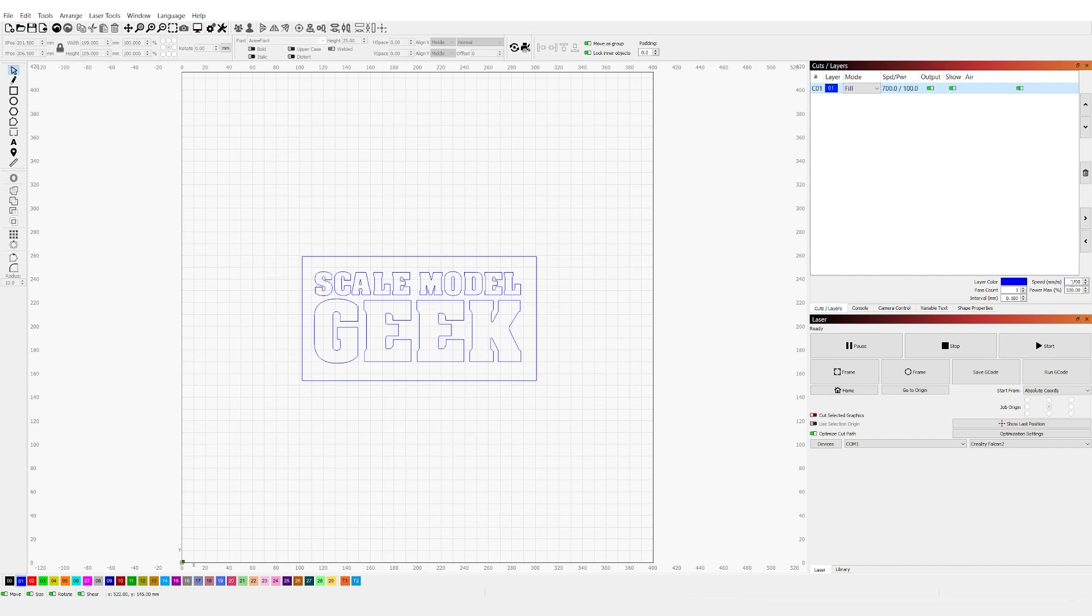We need to tell it how to engrave it. We have two more settings to adjust and the first one is the speed. Because we're using two millimeter bass wood we can do it pretty quickly. We can do an engraving speed of 3,000 millimeters per minute and also our strength or power only needs to be 60 percent. We now need to give our rectangle a different color code so we can give it a different set of instructions so we select black.